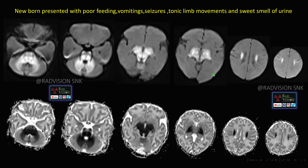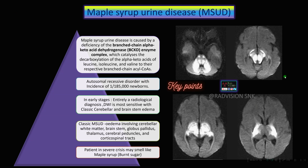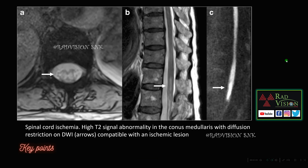Next: this is a newborn presenting with vomiting, seizures, and sweet smell of the urine. You can see classical restricted diffusion on DWI in the brainstem and cerebellum, extending along the corticospinal tracts with low ADC values. This was a case of maple syrup urine disease. Whenever you see classical restricted diffusion on DWI in the brainstem and cerebellum in a child with sweet smell of the urine, definitely suspect maple syrup urine disease.